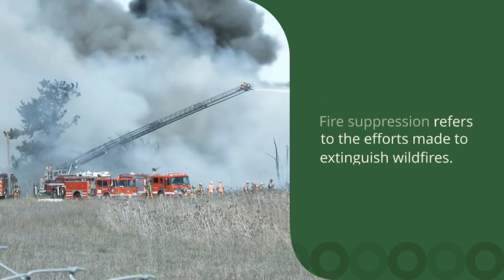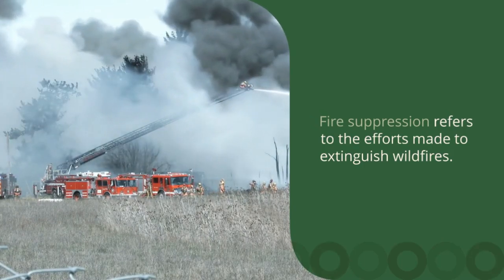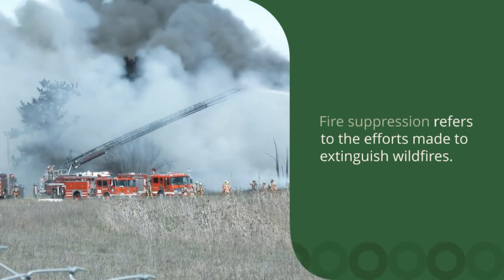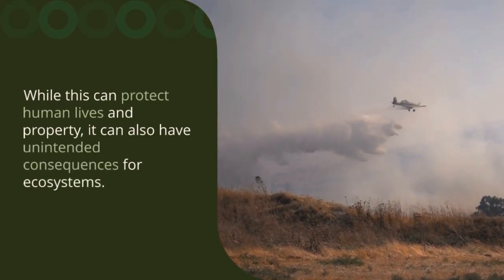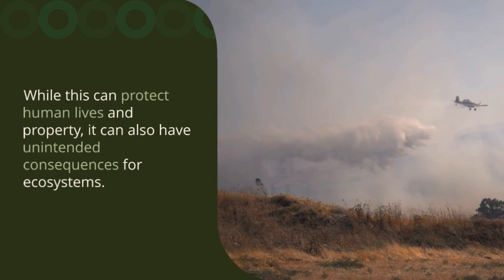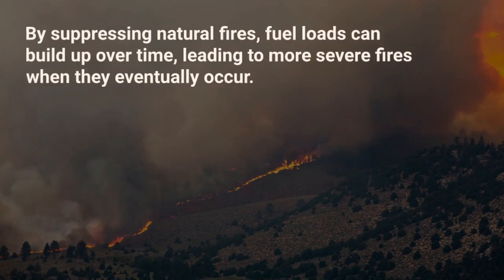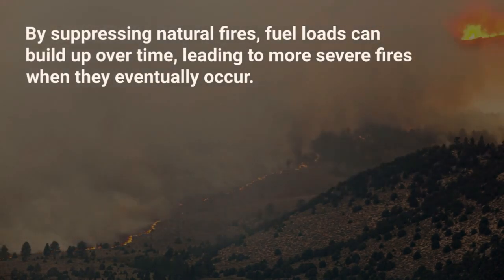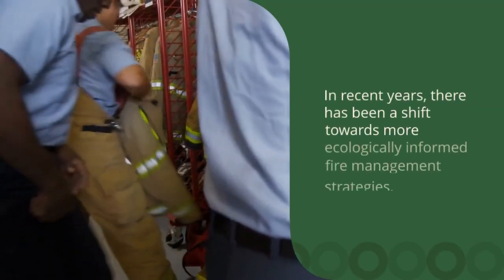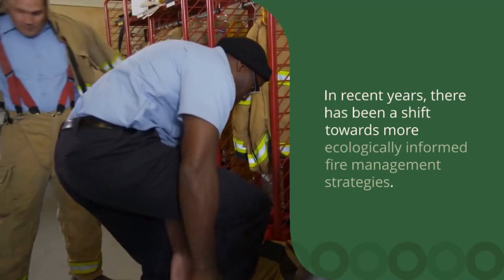Fire suppression refers to efforts made to extinguish wildfires. While this can protect human lives and property, it can also have unintended consequences for ecosystems. By suppressing natural fires, fuel loads can build up over time, leading to more severe fires when they eventually occur. In recent years there has been a shift towards more ecologically informed fire management strategies.